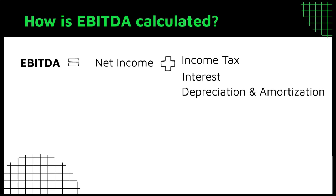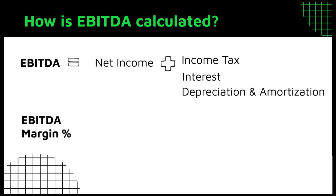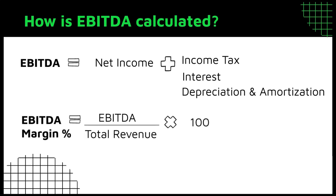When EBITDA is expressed as a percentage of total revenue, it is referred to as EBITDA margin, which can be used to compare a company's performance to its peers.